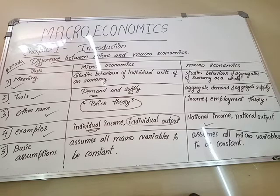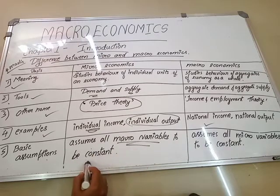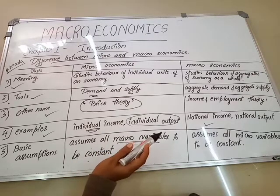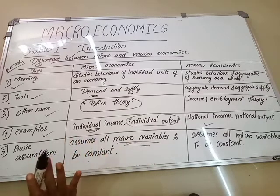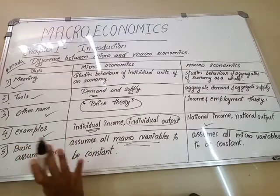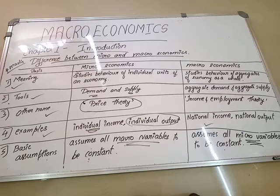Last difference: basic assumptions. Microeconomics assumes that all macro variables are kept constant — national income and national output are assumed to remain static and constant. Similarly, macroeconomics assumes that all micro variables will be kept constant — meaning individual income, individual output, and the decisions of individual firms will remain constant.